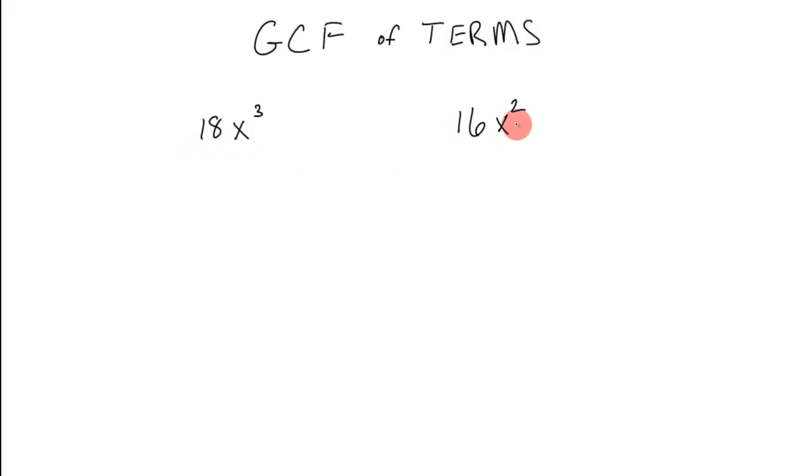18x cubed and 16x squared. And the greatest common factor means what factors or numbers that multiply up to 18x cubed are in common with the numbers that multiply to 16x squared, so the factors of each of those.